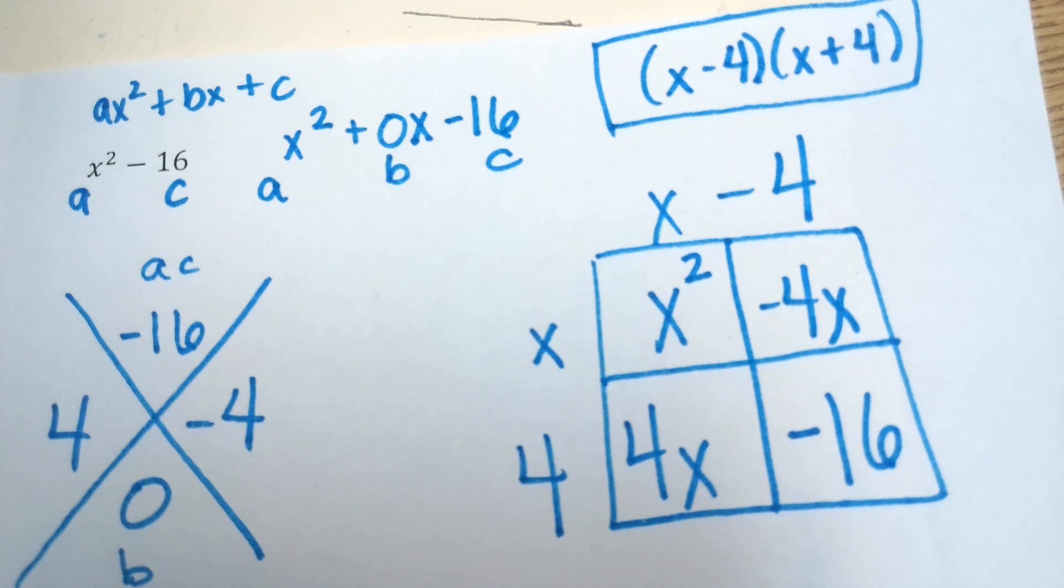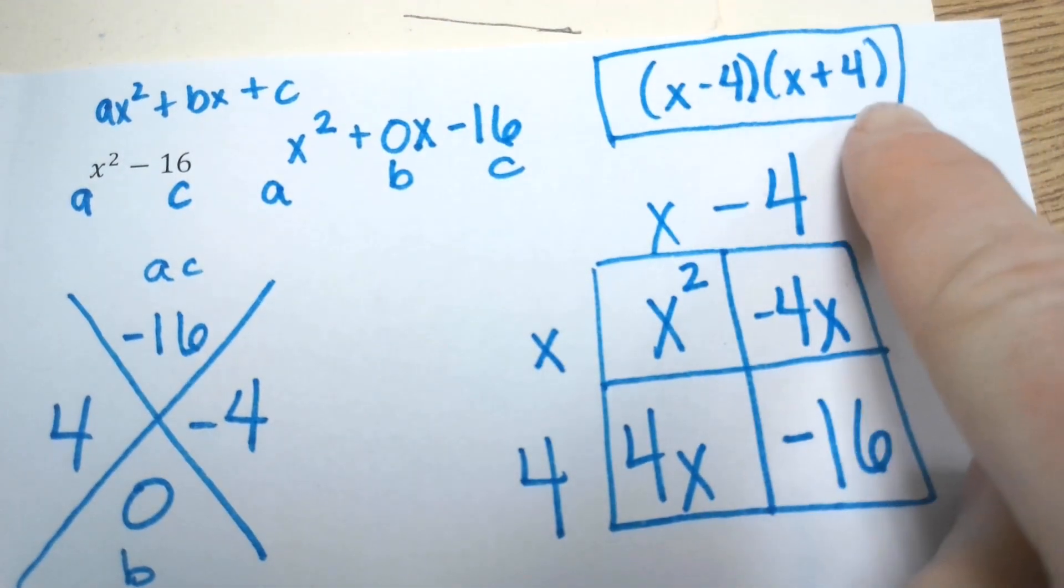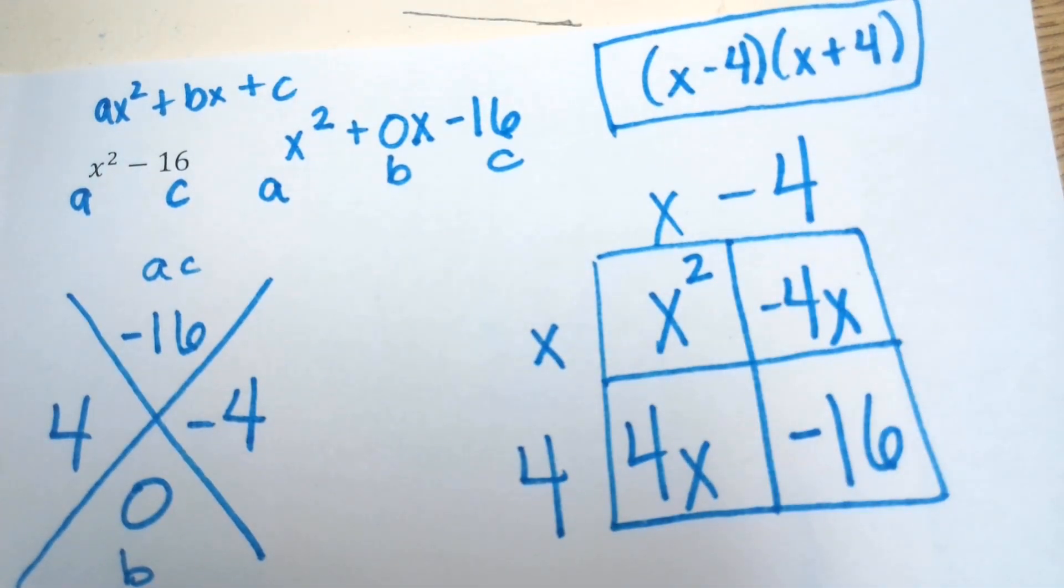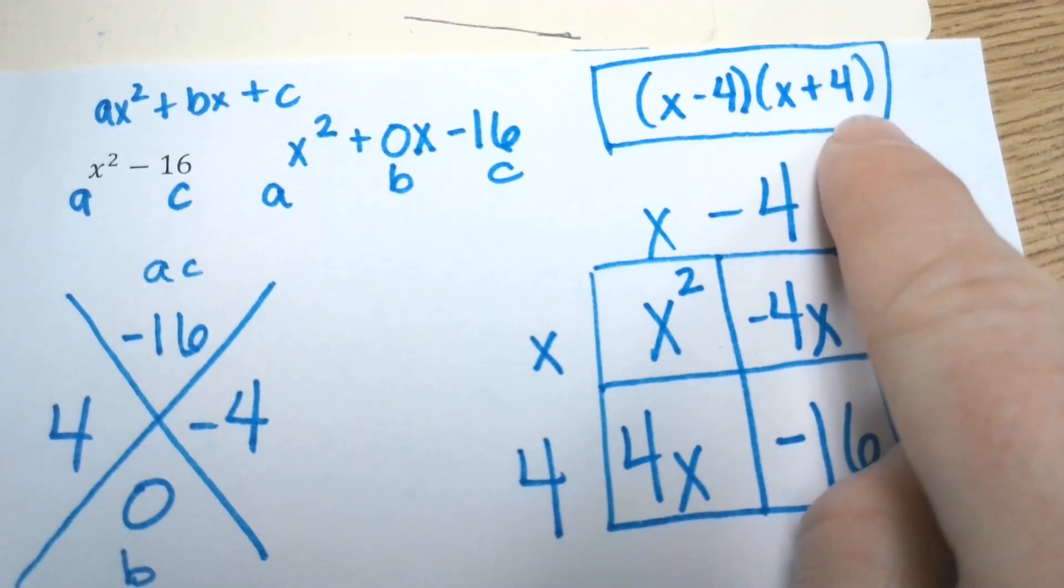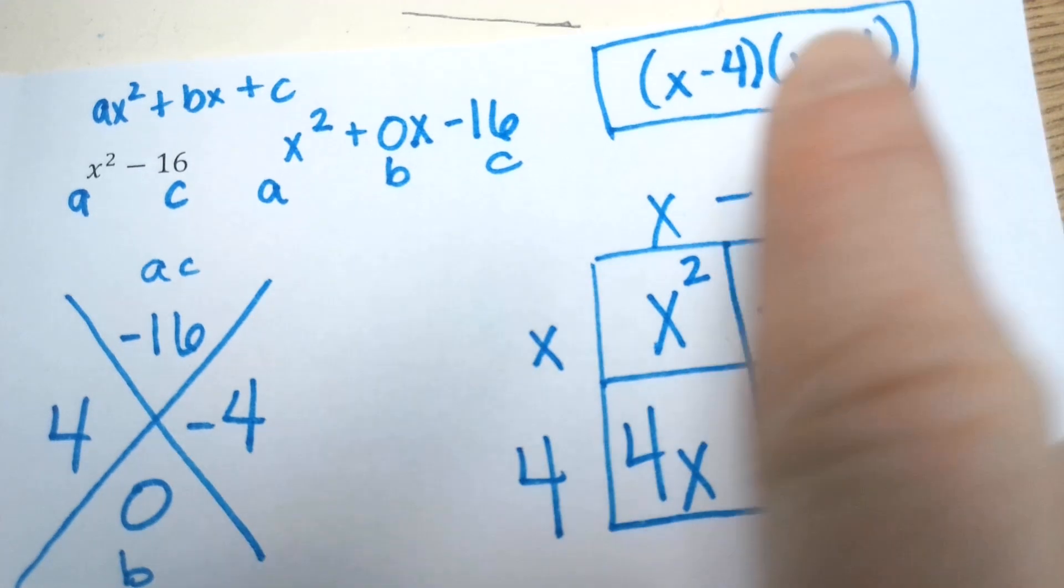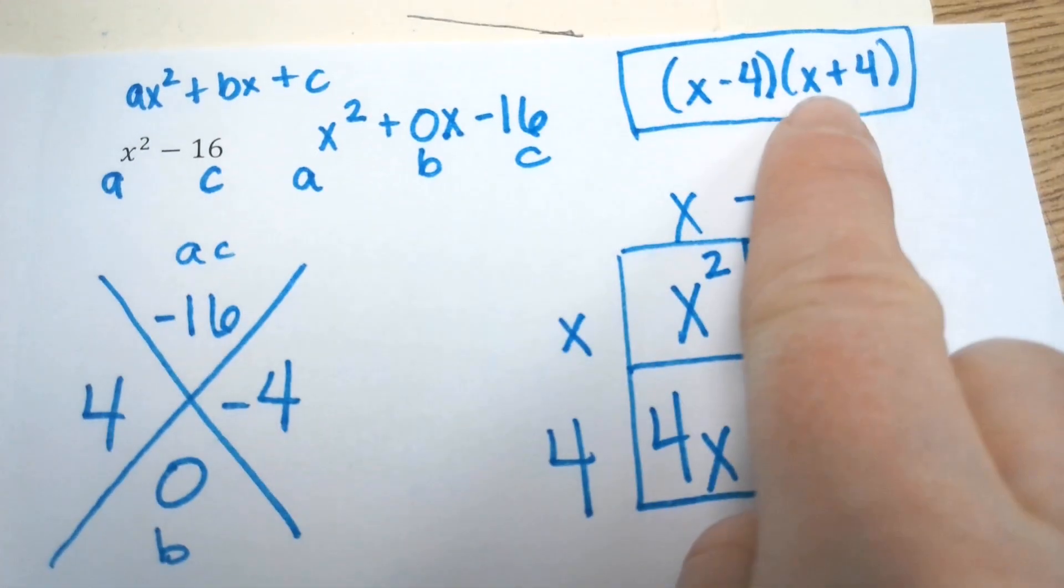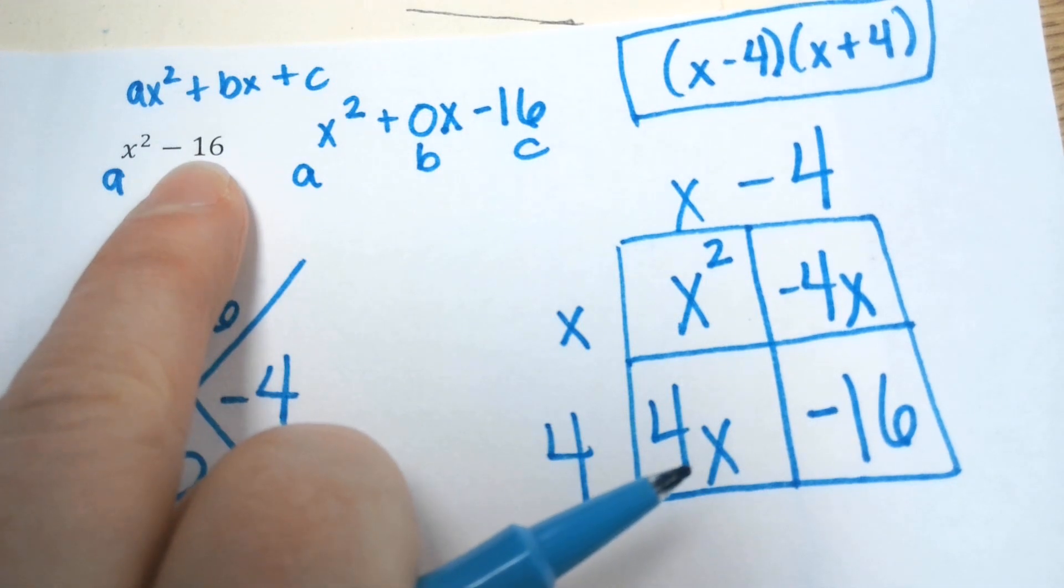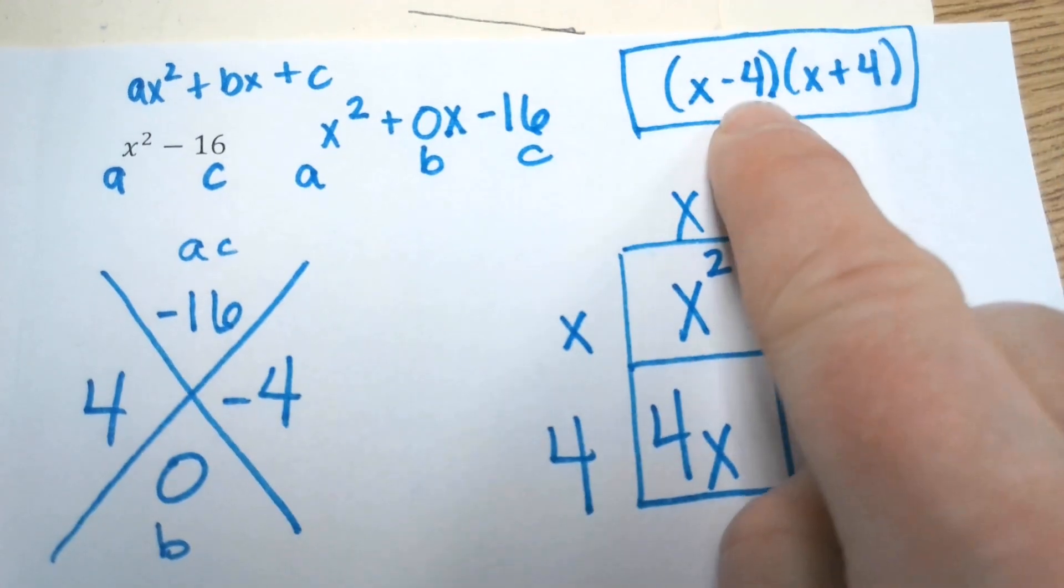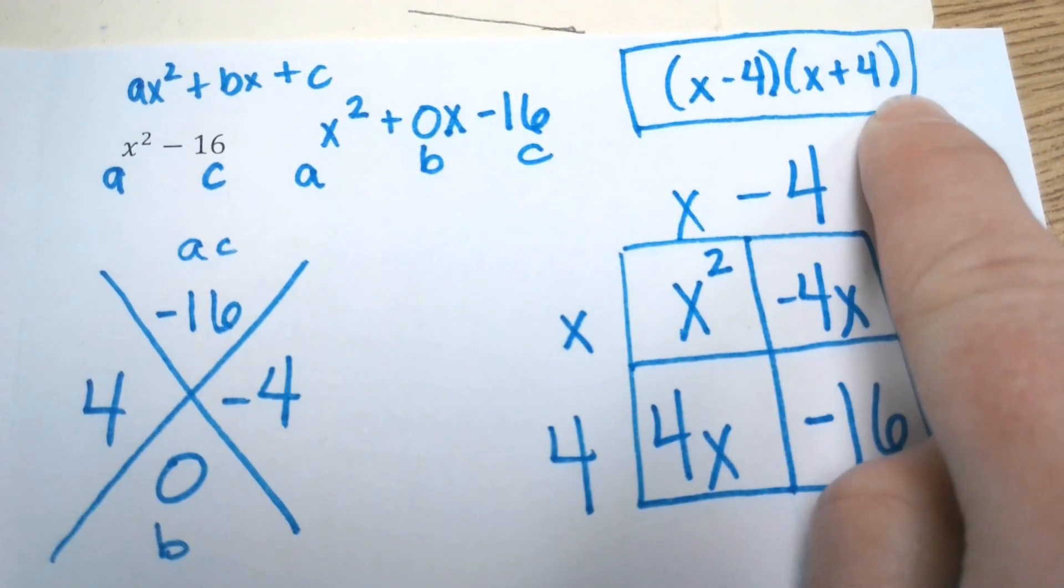Okay, that is how it's going to always be whenever you have no middle term. They'll be the same binomials, except one is positive and one is negative. And the way you find out what the number is, is you look at what is the square root of 16. Square root of 16 is 4. So see how we put -4 and +4? Turn over on the back real quick, because I want to talk about a couple of other ones.